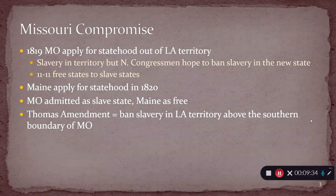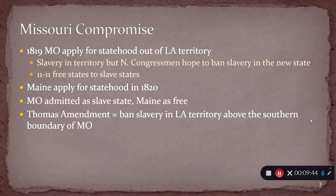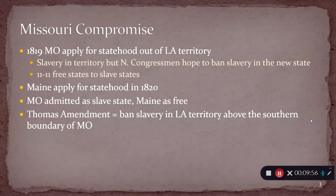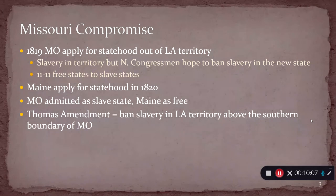Because all of that territory of the Louisiana Purchase is still up for grabs. Missouri is the first state coming into the Union from that space, but it's certainly not going to be the last. The question is, should we tackle this every single time a new state wants to come in from the Louisiana territory? If so, there's no guarantee that there's going to be an equal opposite state. Whatever state comes in from Louisiana might be free or might be slave, and there's no guarantee there will always be an opposite number ready to enter the Union.